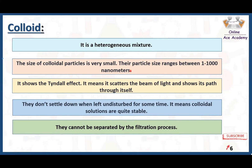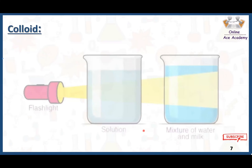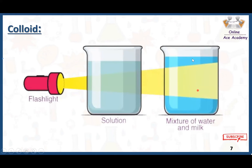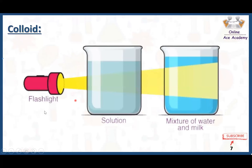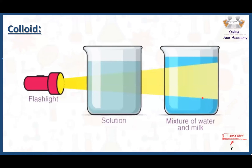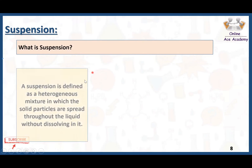Here you can see how colloids show the Tyndall effect. This is a beam of light passing through a solution — in the solution, the light is not scattered, it just passes through. But in a mixture of water and milk, which is a colloid, when the beam of light passes through this mixture, the light scatters here and there — this is called the Tyndall effect, and this is the specialty of colloids. What is a suspension?